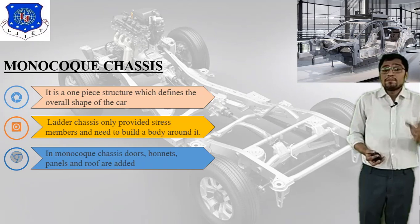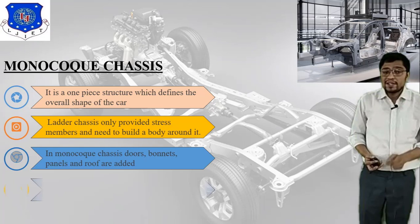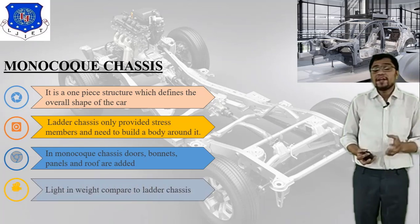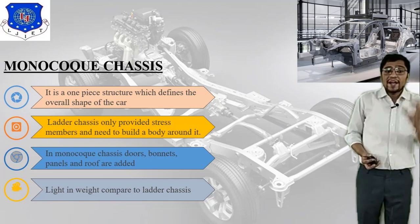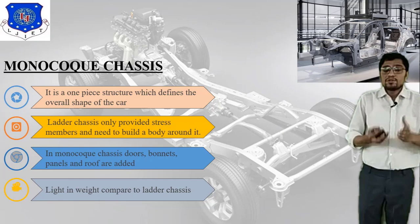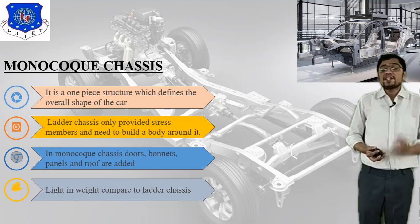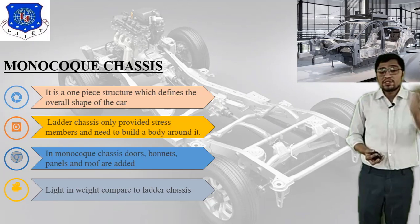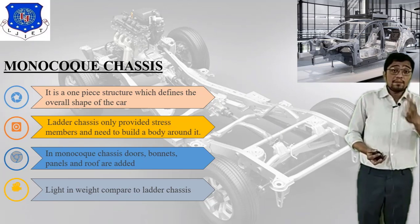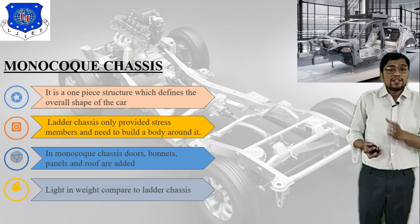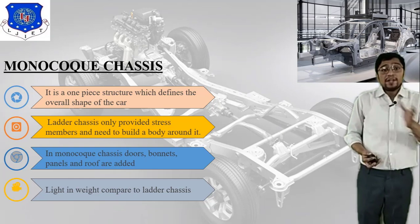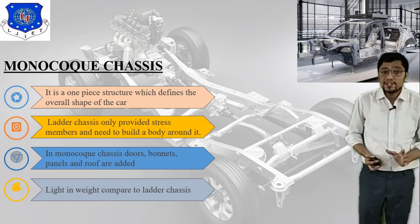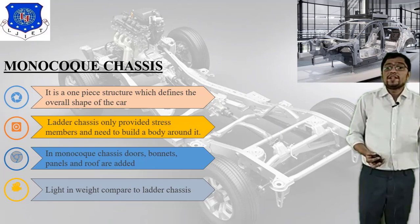A key difference is that monocoque chassis is lighter in weight compared to the ladder chassis. Normally, each and every car uses a monocoque chassis, whereas buses and trucks use the ladder chassis. This is the main difference between ladder chassis and monocoque chassis.